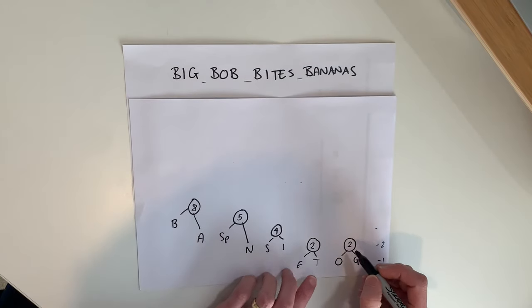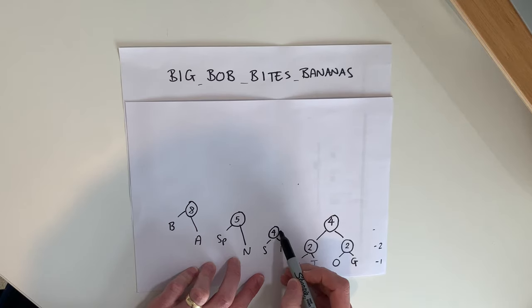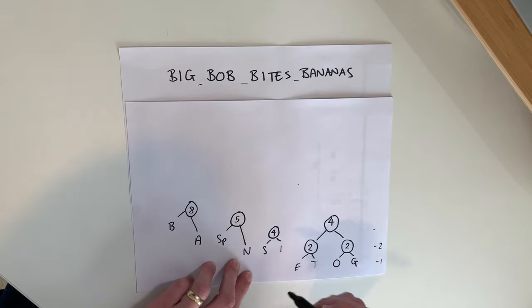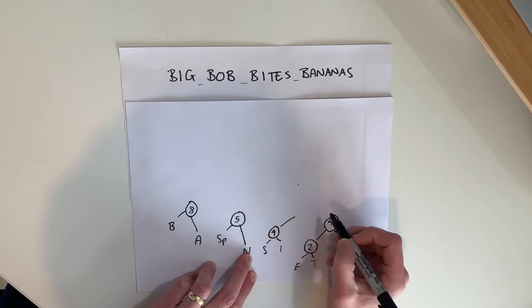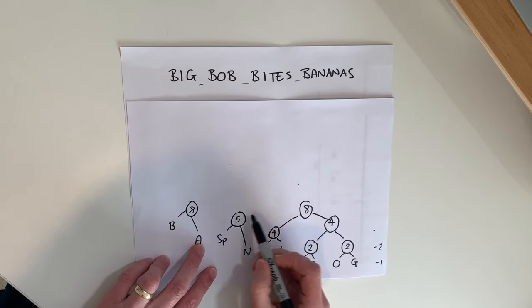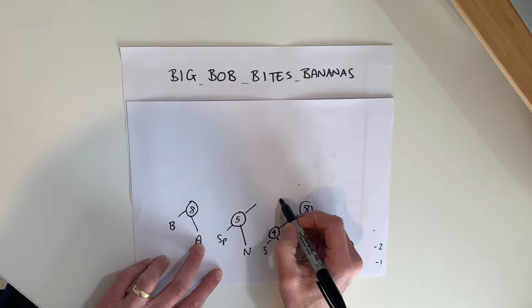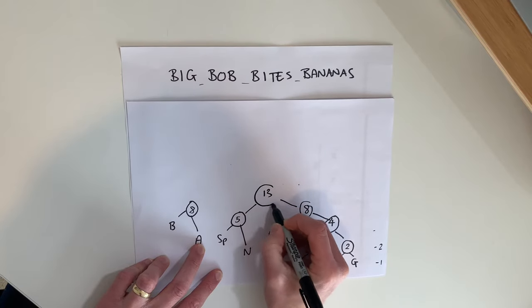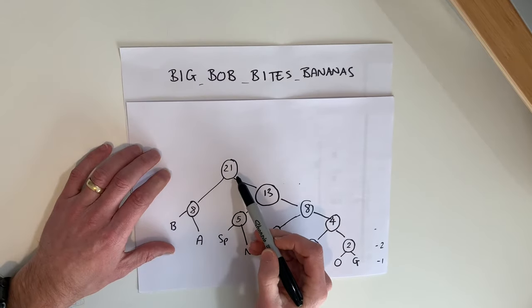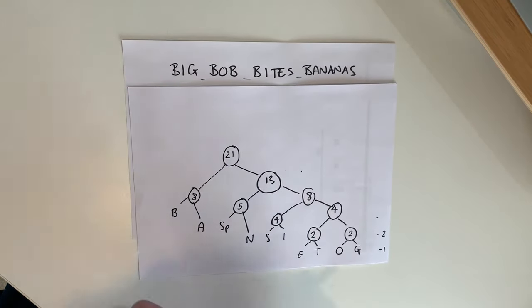Now that all characters are in the diagram, we go back to the right-hand side and do another level of pairing. Two and two combine to a frequency of four; four and four combine to eight. I could pair the five with either eight, but since we always work from the right-hand side, eight and five combine to thirteen. The final pairing is eight and thirteen, which gives twenty-one — our total character count — confirming the Huffman tree is complete.